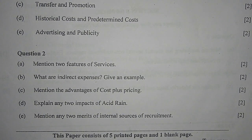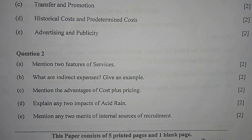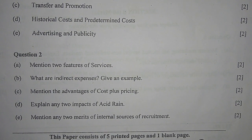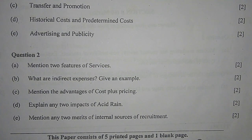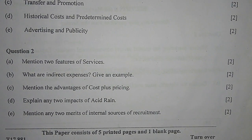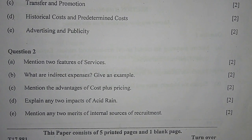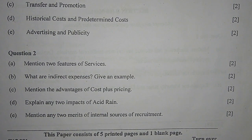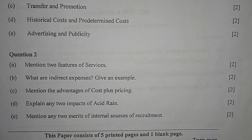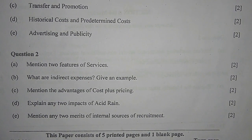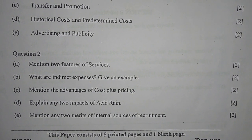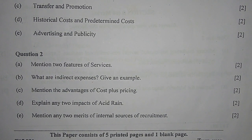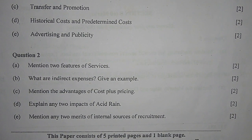Part B — What are indirect expenses? Give an example. Indirect expenses are those expenses incurred to operate a business as a whole but cannot be directly associated with the costing object like a product or service. These are basically costs of running the office. Examples include accounting expenses, audit fees, and similar items.